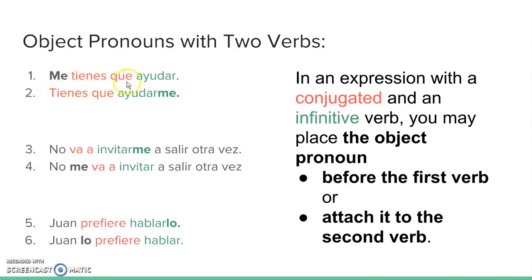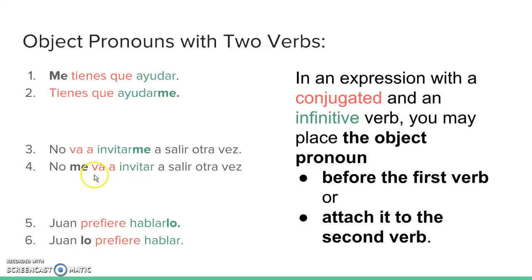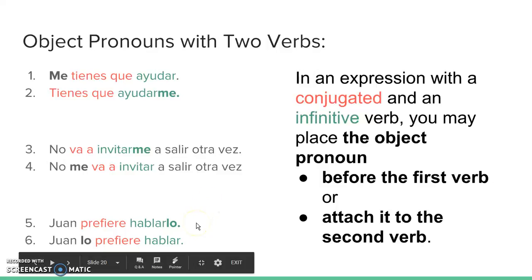For example, 'you have to help me' — 'me tienes que ayudar' — or you can say 'tienes que ayudarme.' Notice the 'me' can go before the first verb or be attached to the end of the second verb with no space. Similarly, 'no me va a invitar a salir otra vez' or 'no va a invitarme a salir otra vez.' Juan prefiere hablarlo or Juan lo prefiere hablar — attach it to the second verb or place it before the first.